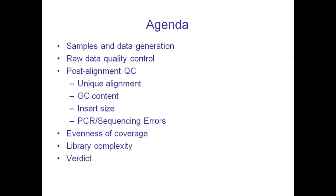I'll start off with just an overview of the samples that were analyzed, the study design, and then a whole variety of quality control metrics — both at the raw data level as well as at the post-alignment level. Things that I really care about are what fraction of reads align uniquely to the genome, whether there are any biases in terms of GC content or insert sizes, and PCR or sequencing errors — you want to minimize those. For a large genome such as the human genome, you'd like to have relatively even coverage to maximize sensitivity with the minimum amount of sequencing. And of course you'd like to have high library complexity — you don't want many PCR duplicates.